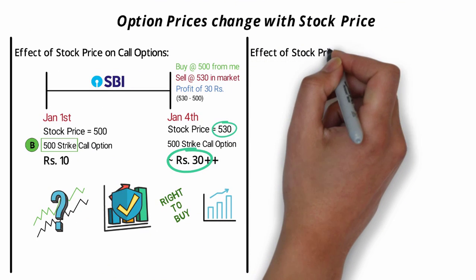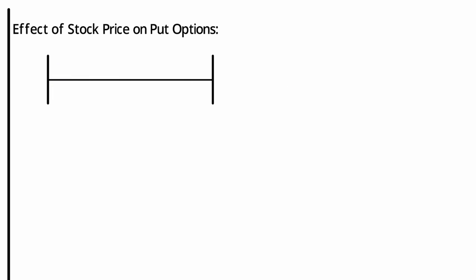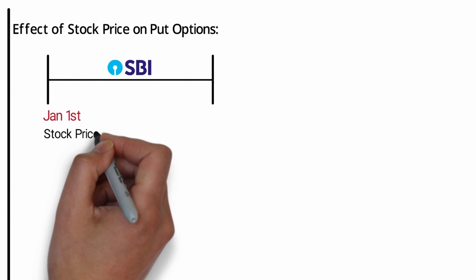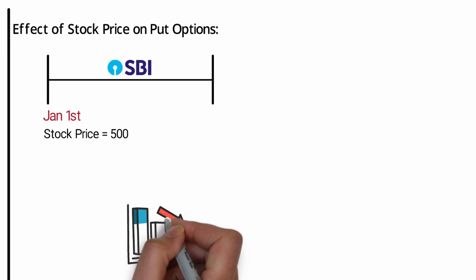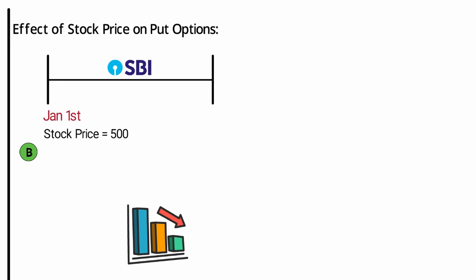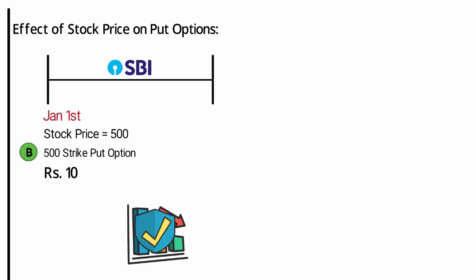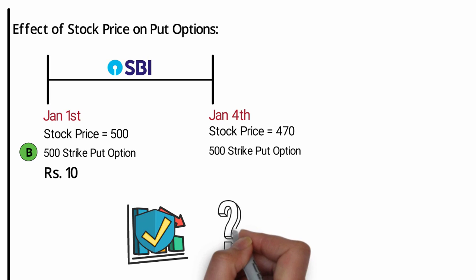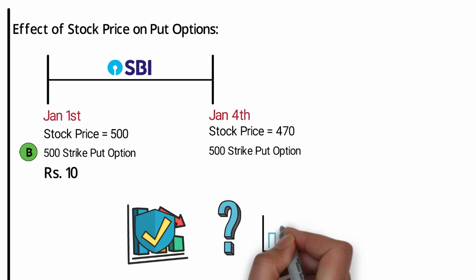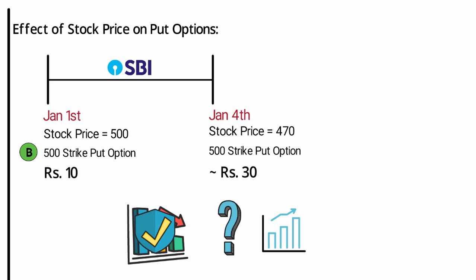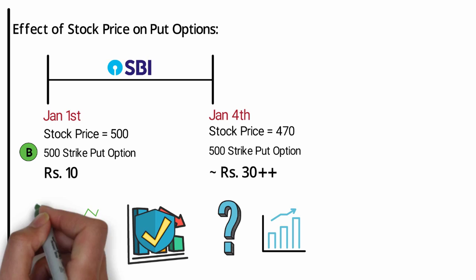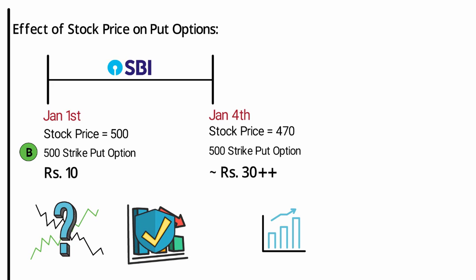Now let's understand the effect of stock price change on put options. On January 1st, SBI is trading at 500 rupees. You are worried the price will go down in the near future, so you buy a 500 strike put option. I charged you 10 rupees as I am selling an option to protect you, like an insurance. After three days on 4th January, SBI tanks to 470. The price of the 500 strike put option will increase to somewhere around 30 rupees, as the put option makes money when the stock price moves down.